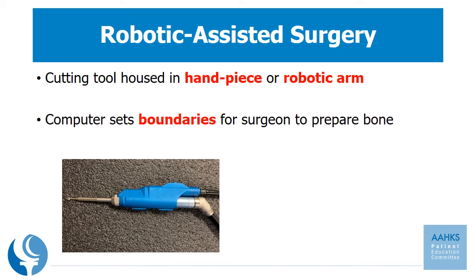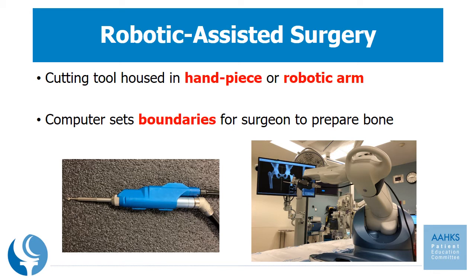The first example is a hand-held burr where the computer controls the speed of the cutting tip. The other is a robotic arm that the surgeon programs during the planning phase. The surgeon controls the saw blade during surgery, with the computer holding the blade in a specific position to help prepare the bone.